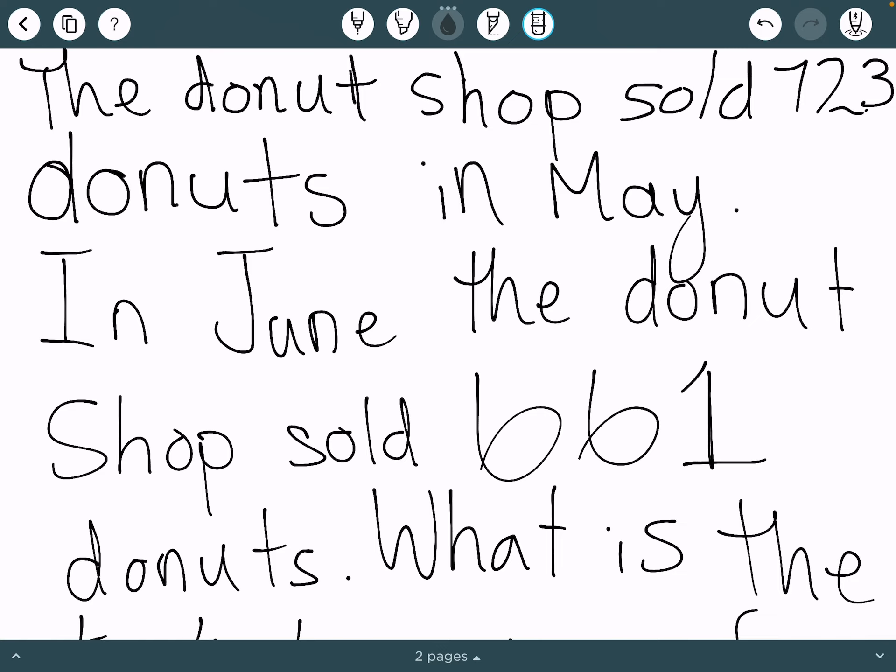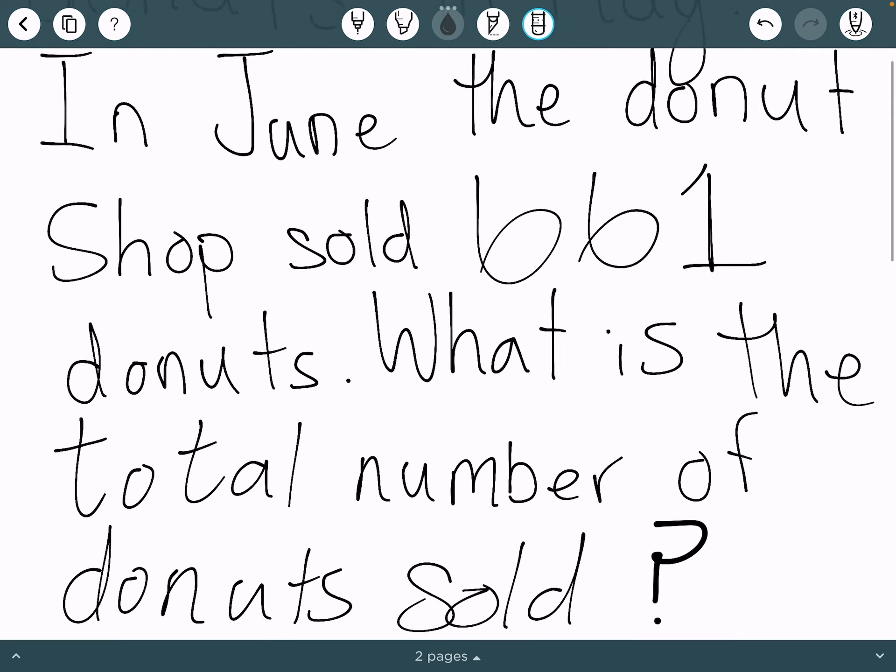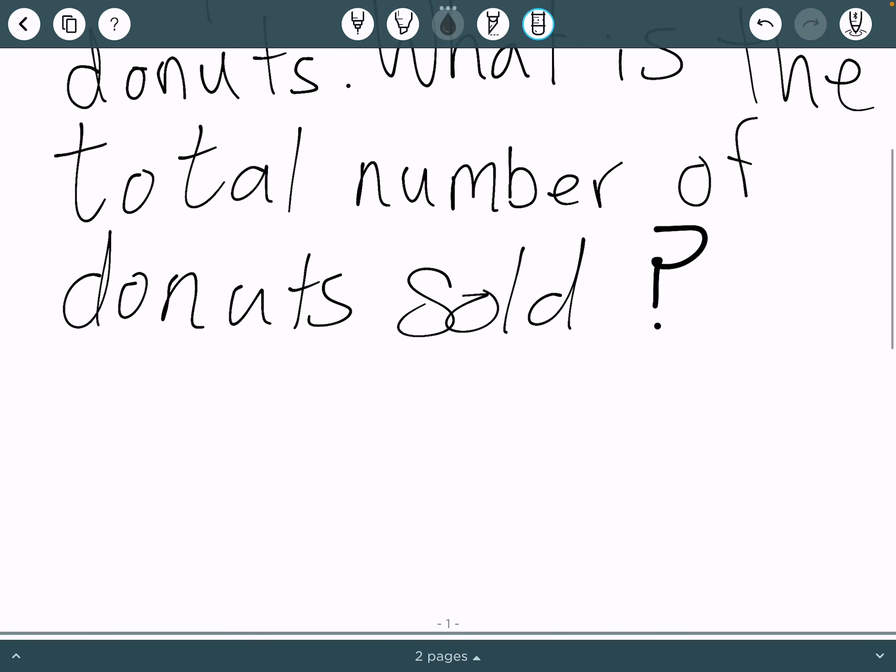Today's math question is the donut shop sold 723 donuts in May. In June the donut shop sold 661 donuts. What is the total number of donuts sold?